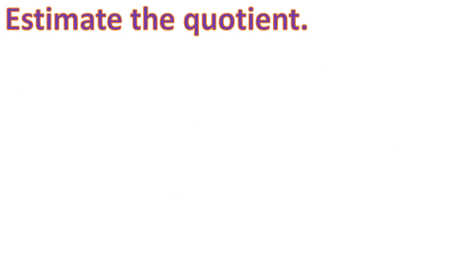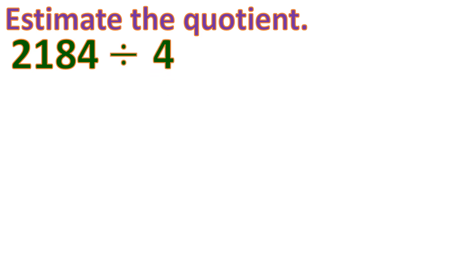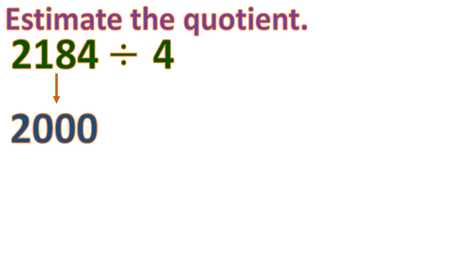Let's have another example. We have 2,184, a 4-digit number, divided by 4, a 1-digit number. To estimate the quotient, we round off the values so that it's easier to divide. 2,184 rounded off to its highest place value, which is the thousands place, becomes 2,000 — we round down because the number at the right is only 1, which is less than 5. For the divisor, we just copy it because it's only 1 digit.